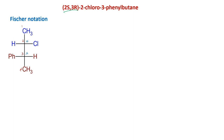We are going to see the RS notation for the chiral carbons. For the second carbon, the halogen has priority 1, this carbon is priority 2, and methyl is 3. The order is clockwise, but the least priority group is in the horizontal position, so it is 2S. For the third carbon, this carbon is first, phenyl is second, and methyl is third. This goes counterclockwise but the least priority is horizontal, so the notation is 3R.